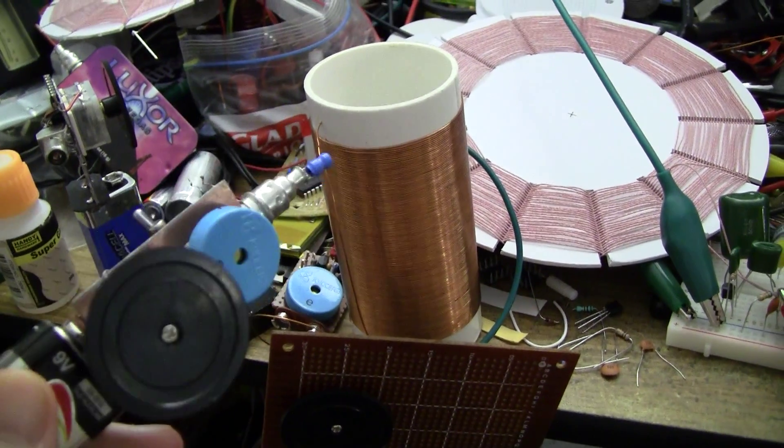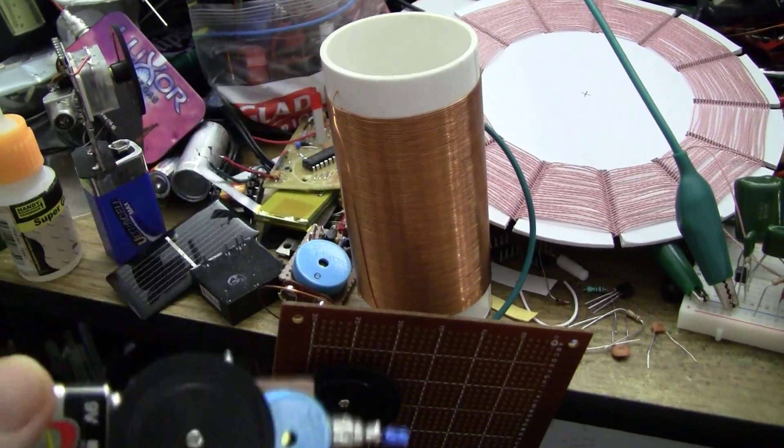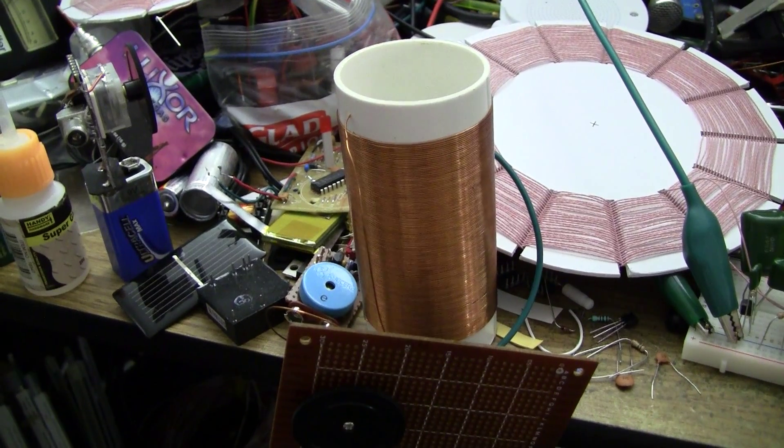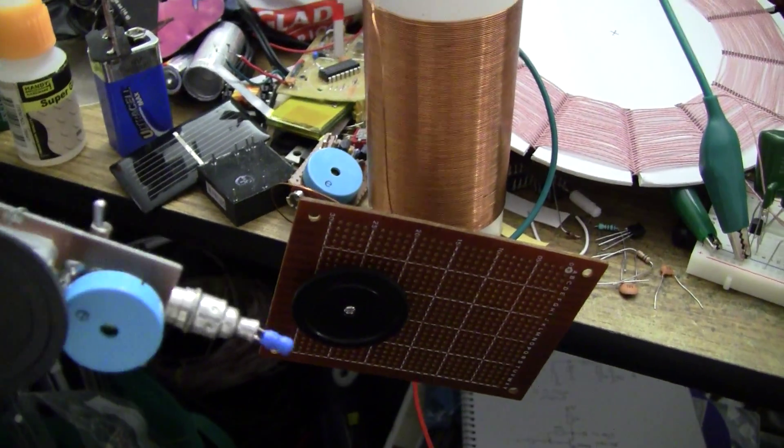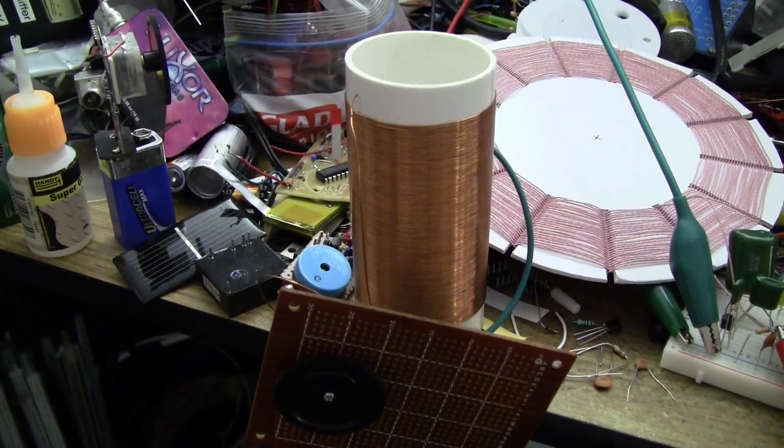This coil is the front end tuner from yesterday's crystal set receiver. As you can see, it's just a solenoidal coil. It's about 460 to 490 microhenries. Tuned with a polyvericon. There's a matching capacitor down there to try and match it to the antenna.